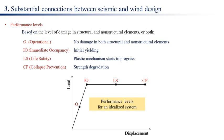Performance levels are based on the level of damage in structural and non-structural elements, or both. O: Operational — no damage in both structural and non-structural elements. IO: Immediate Occupancy — initial yielding. LS: Life Safety — plastic mechanism starts to progress. CP: Collapse Prevention — strength degradation.